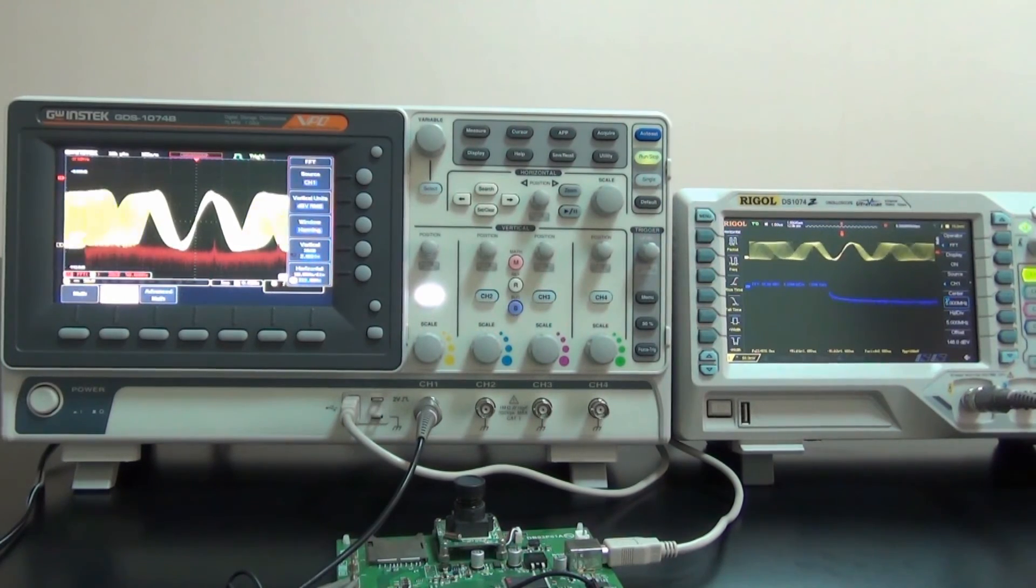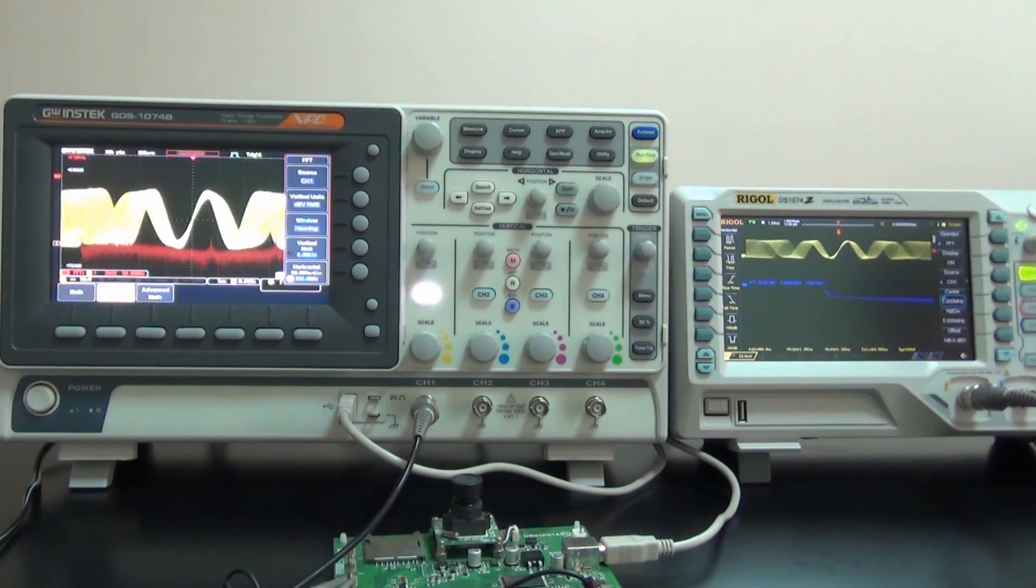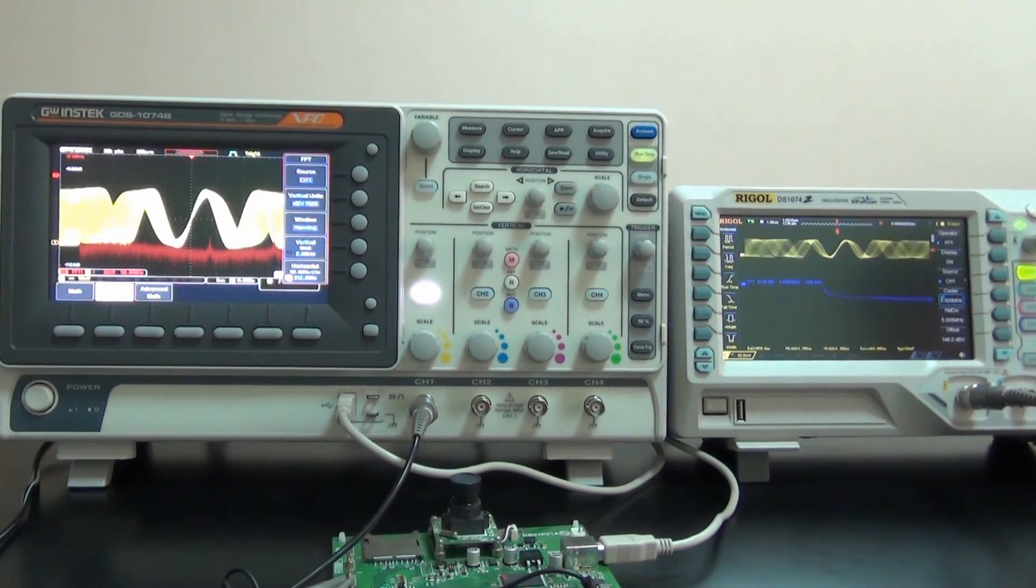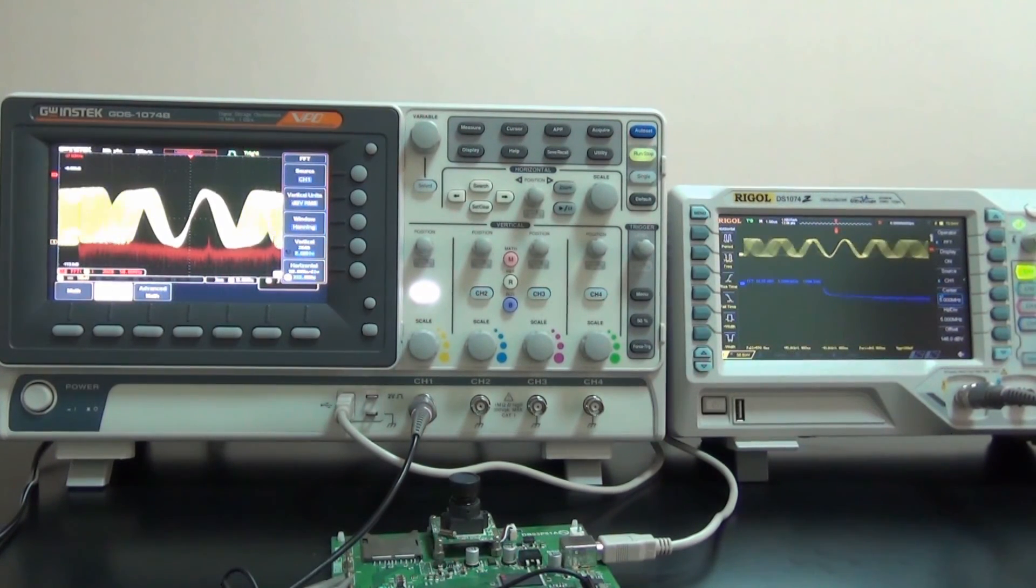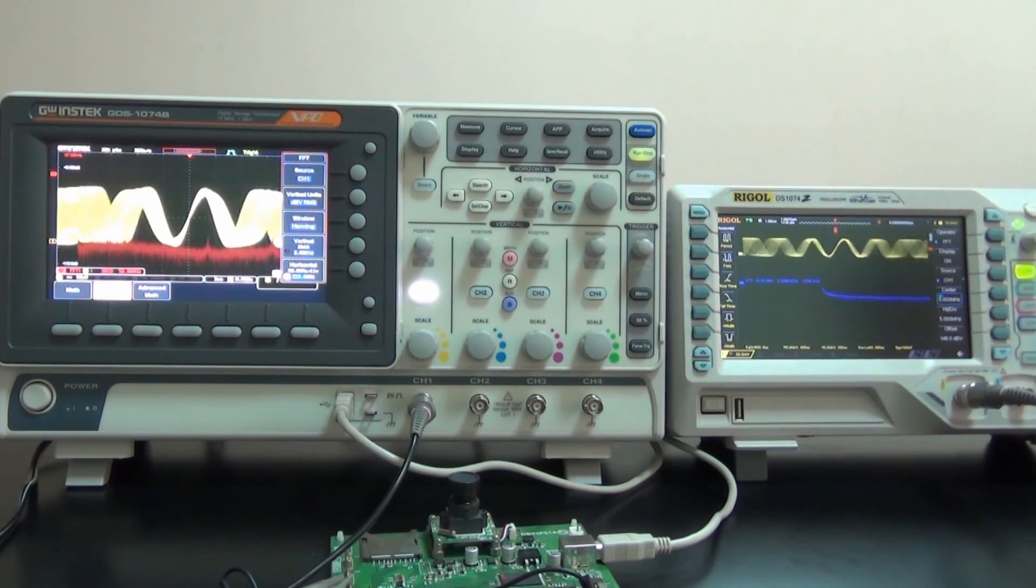From the above instances of burst and FM signal measurements, the transient or fast changing signal can be better captured and displayed on GDS-1000B because of its high waveform update rate. This provides engineers a very handy tool to capture and analyze the higher and higher speed signals in contemporary electronic devices.